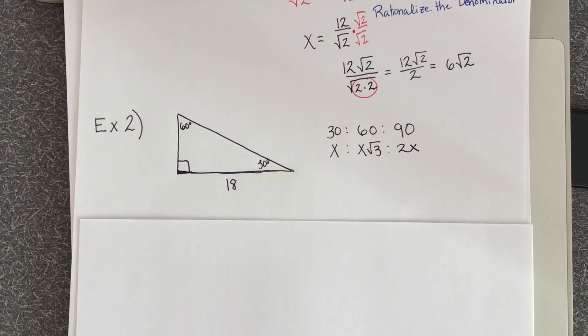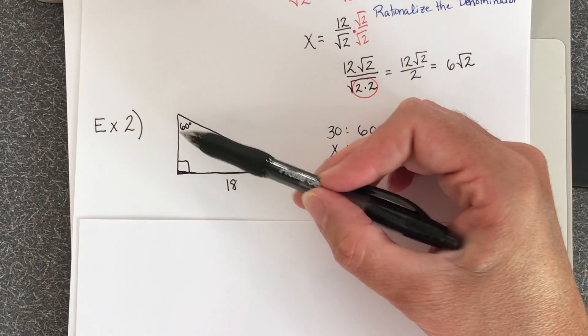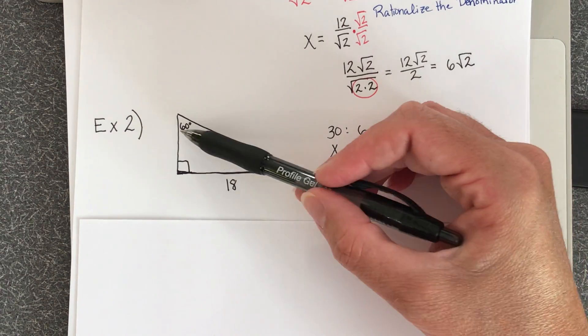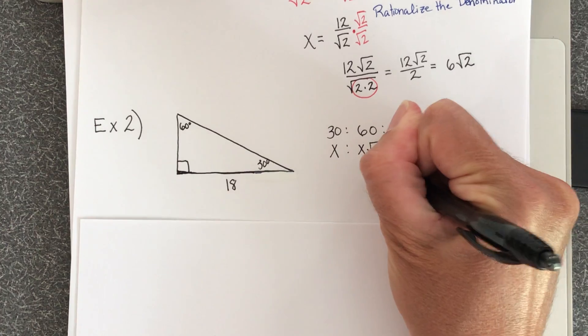So now I've got to figure out which side length I know about. So I know about the side length that is 60 degrees. So 18 is opposite of the 60, so 18 goes here.